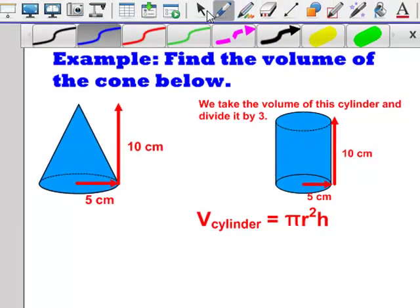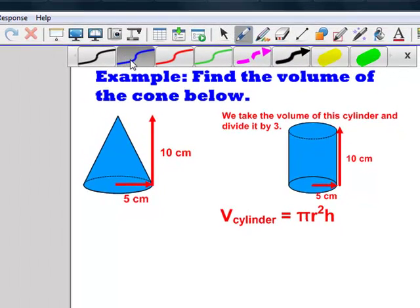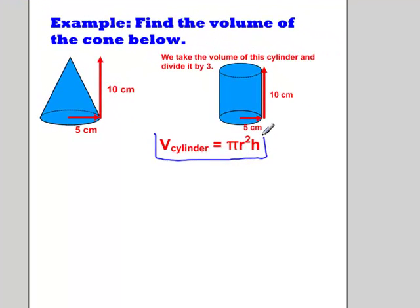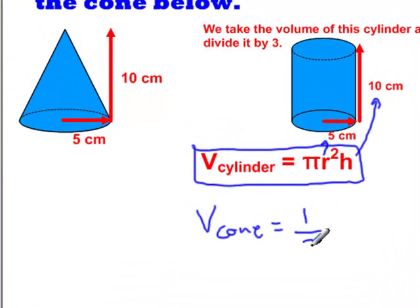In this way, we have our volume of the cone being developed. Our formula for volume of a cylinder is πr²h, where r is the radius and h is the height. Our formula for volume of a cone is equal to one-third times πr²h.